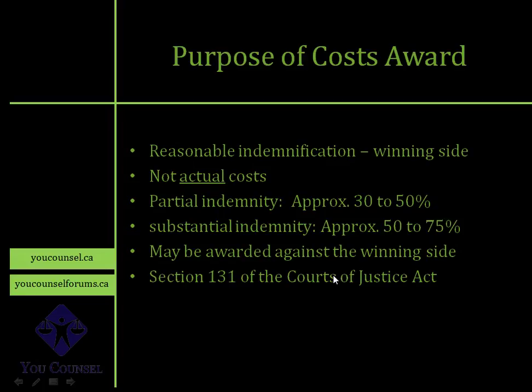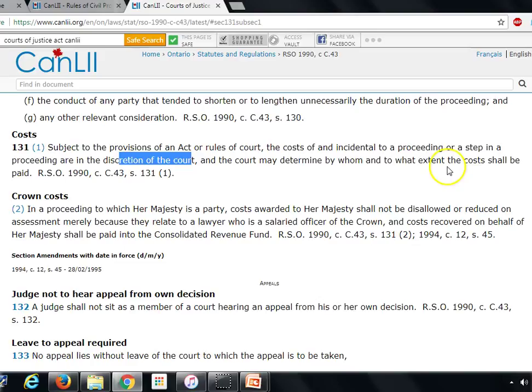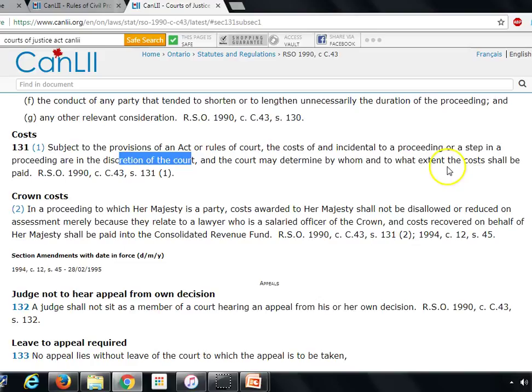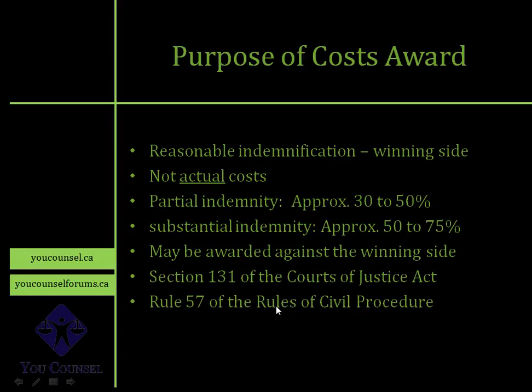Let's look at Section 131 of the Courts of Justice Act. It states: 131(1) — subject to the provision of an act or rules of court, the cost of and incidental to a proceeding or a step in a proceeding are in the discretion of the court, and the court may determine by whom and to what extent the cost shall be paid. The key message here is that it's in the discretion of the judge. The second authority to look at is Rule 57 of the Rules of Civil Procedure. Those are the two items you want to look at if you want to understand more about a cost award.